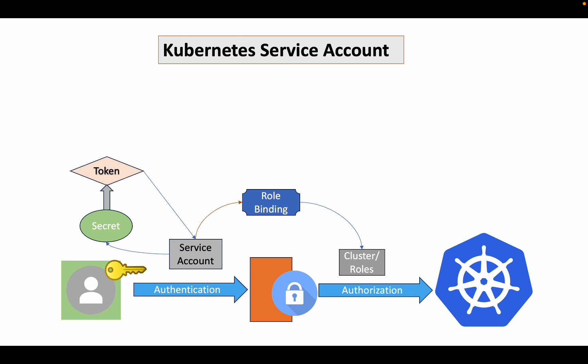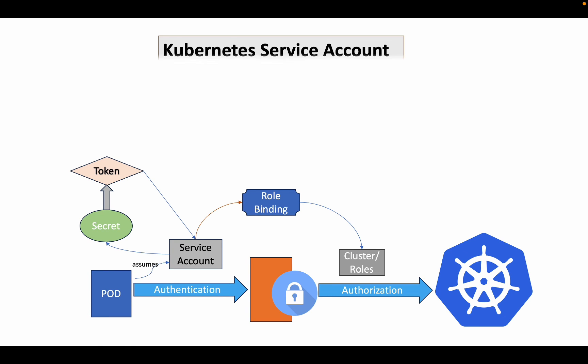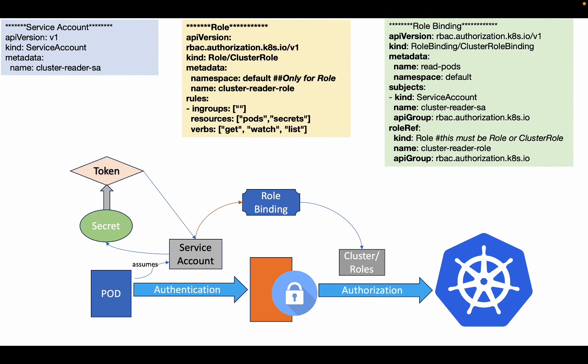Now the pod can access the Kubernetes resources. Always remember this: the service account is created for authentication, and the credentials are attached to the service account as a secret in the form of a token. The role or cluster role is for authorization, containing rules that represent a set of permissions. These roles are tied to the service account through role binding. That is how service account, role, and role binding work together to provide authentication and authorization for your pod or services running inside the cluster.